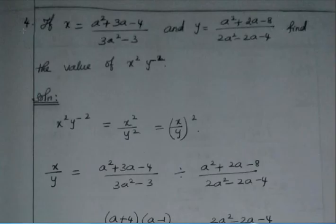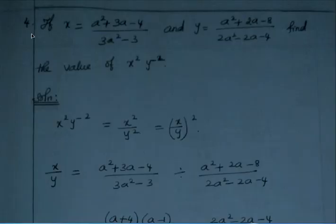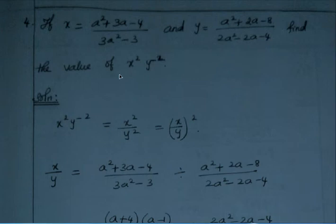If x equals (a² + 3a - 4) / (3a² - 3) and y equals (a² + 2a - 8) / (2a² - 2a - 4), find the value of x² · y⁻². So we need to calculate the value of x² · y⁻².